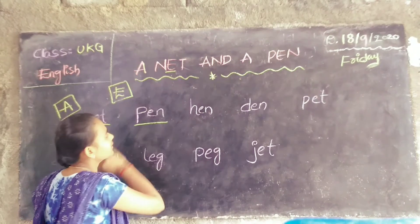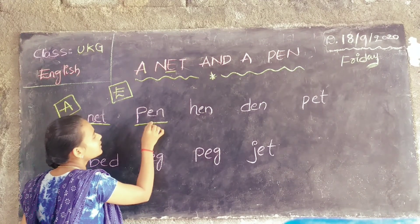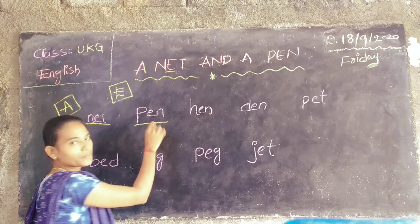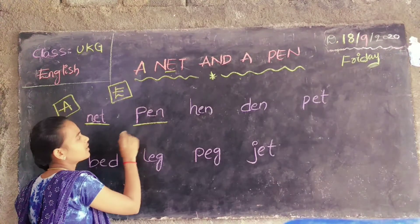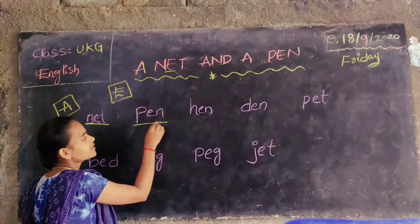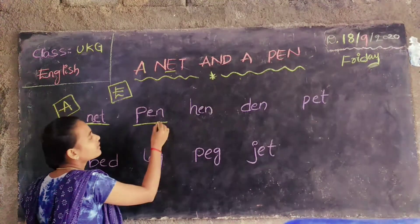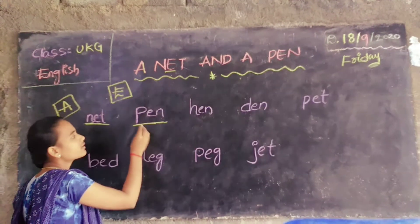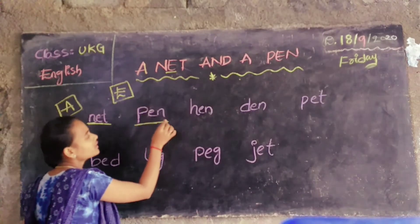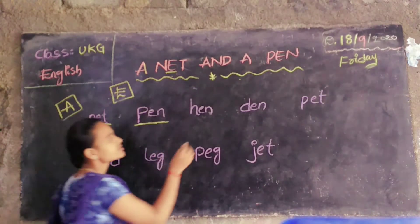Then next: pen. P-E-N. Pen. First, the sound of P is P. Next E sound is A. Next N is N. P-E-N. Pen.